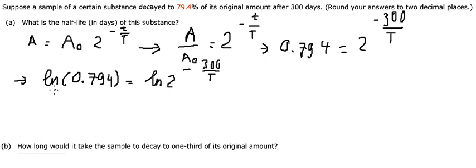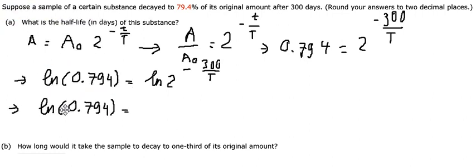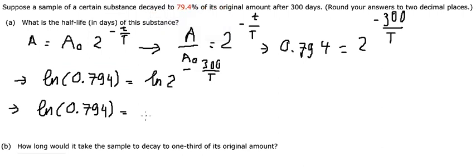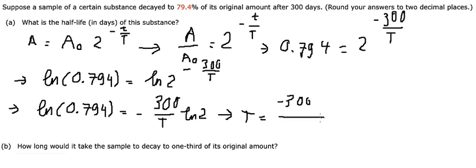Because we have the power inside natural log, we put this one outside. We will have negative 300 over capital T times ln of 2. So we can find capital T.